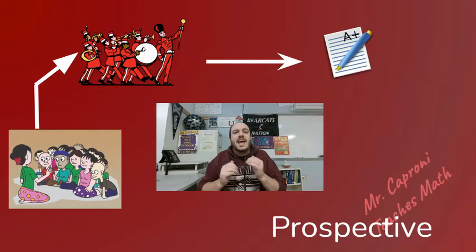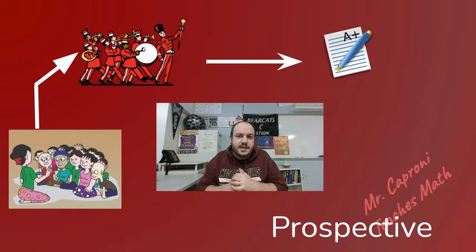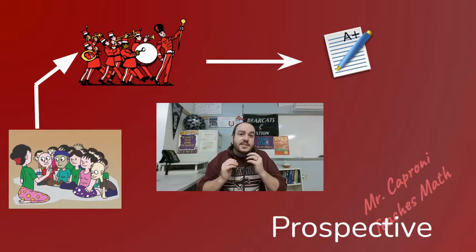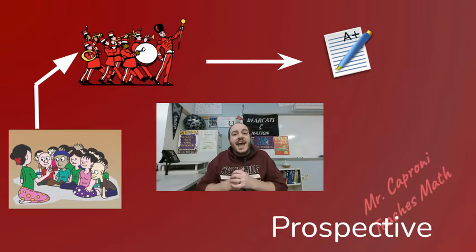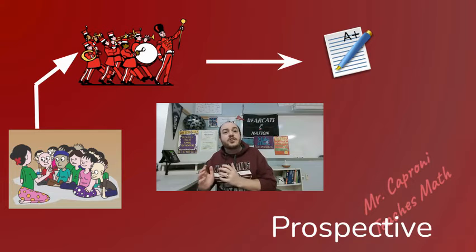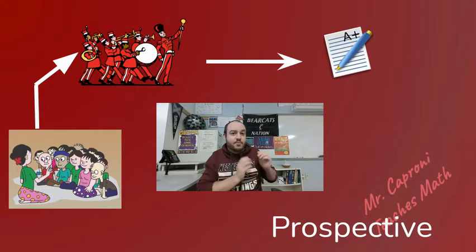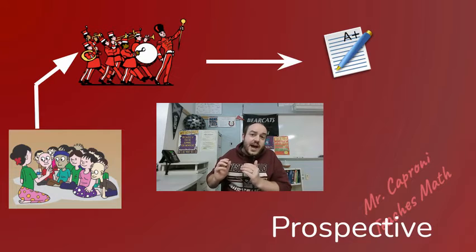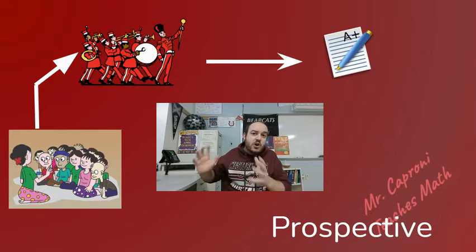And see if they're higher than whatever the average is for the school. That makes this a prospective study because they chose the participants before they actually went through whatever they were observing. Retrospective is when you go back and look at files of previous things that have happened, and prospective is when you actually choose the study first and then let it unfold in front of your eyes.